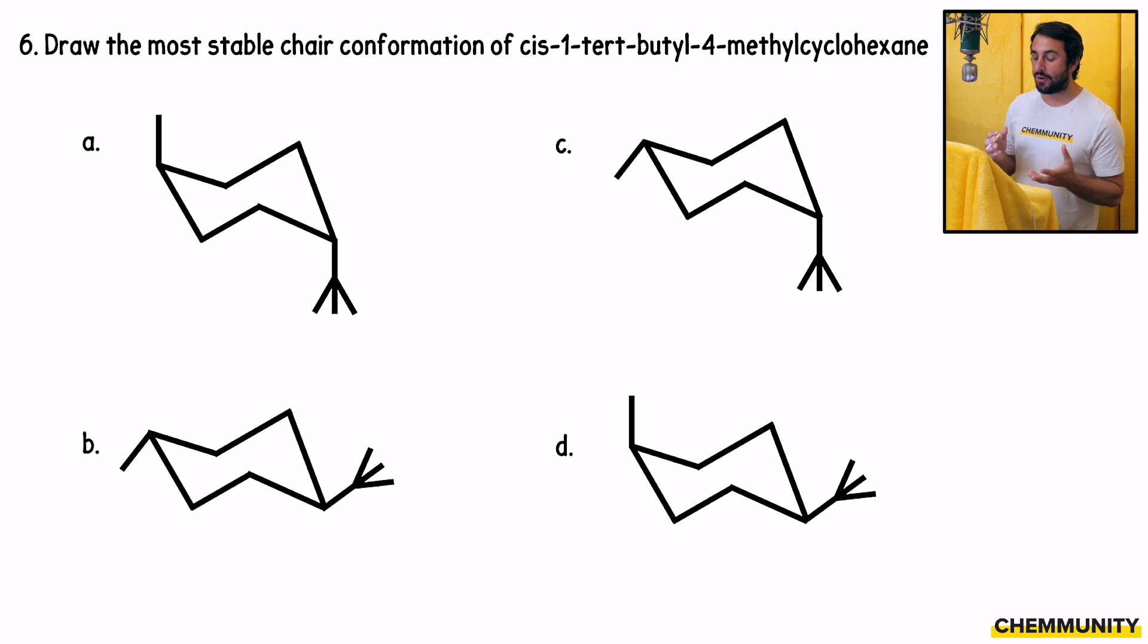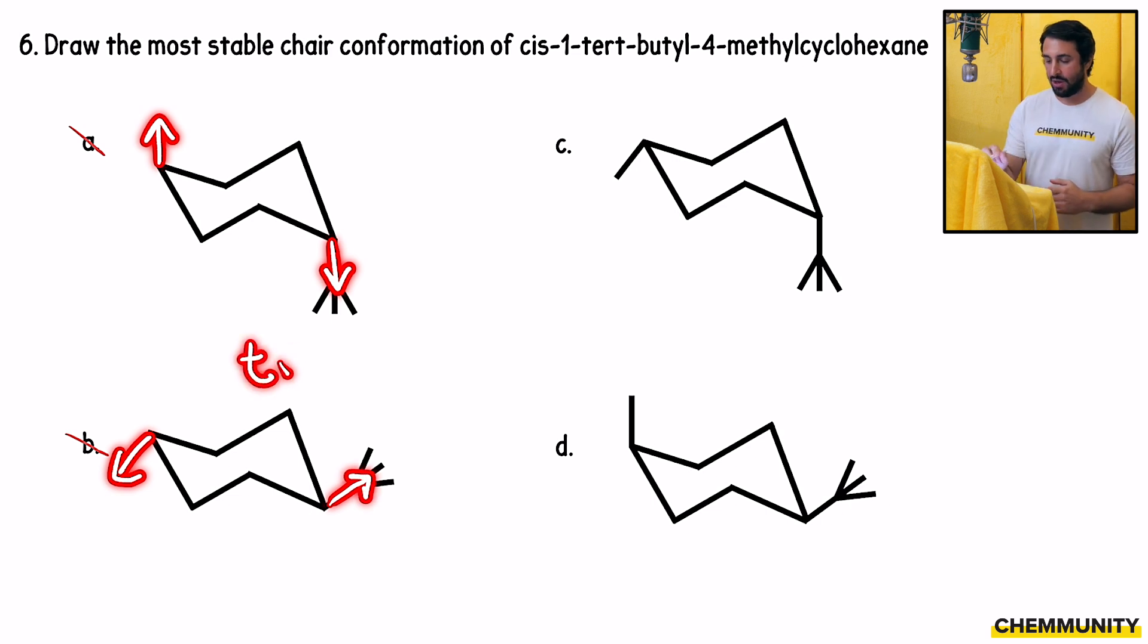So cis means they're on the same side of the ring. We can probably rule out a couple of these just by noticing that they're not in the cis configuration. That's going to be A and B, because these are pointing in different directions. A and B are trans isomers. On A, the methyl is up and the tert-butyl is down. On B, the methyl is down and the tert-butyl is up. So those are actually trans. That's not going to work.